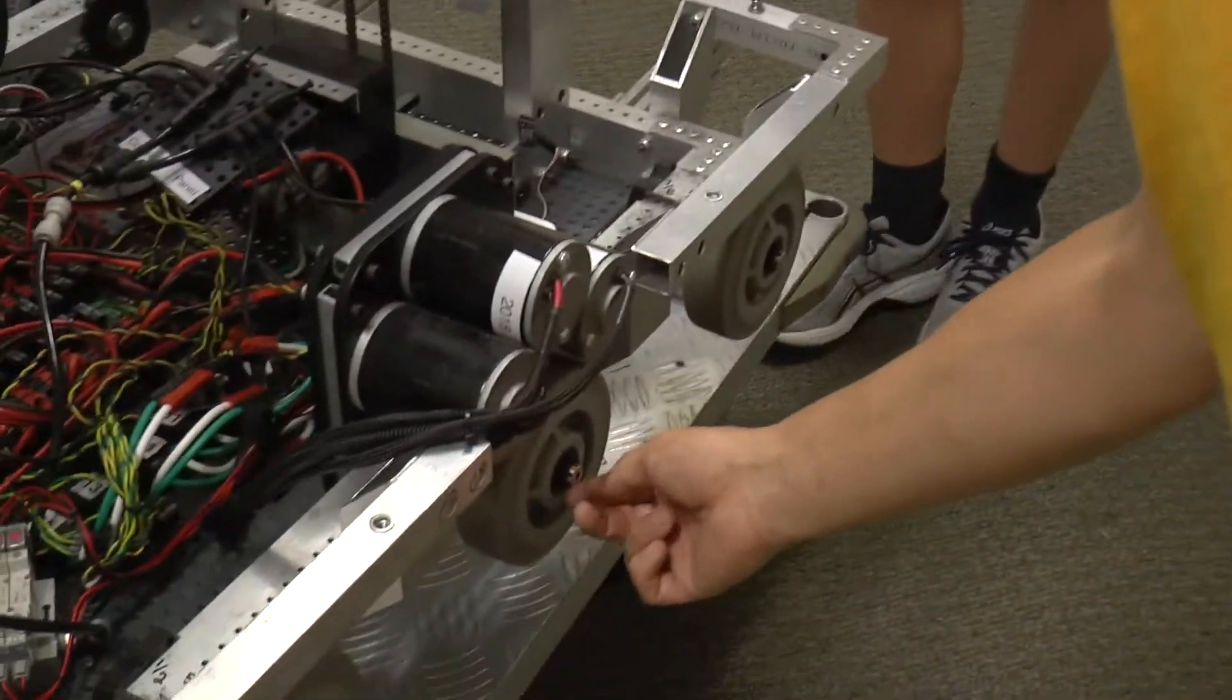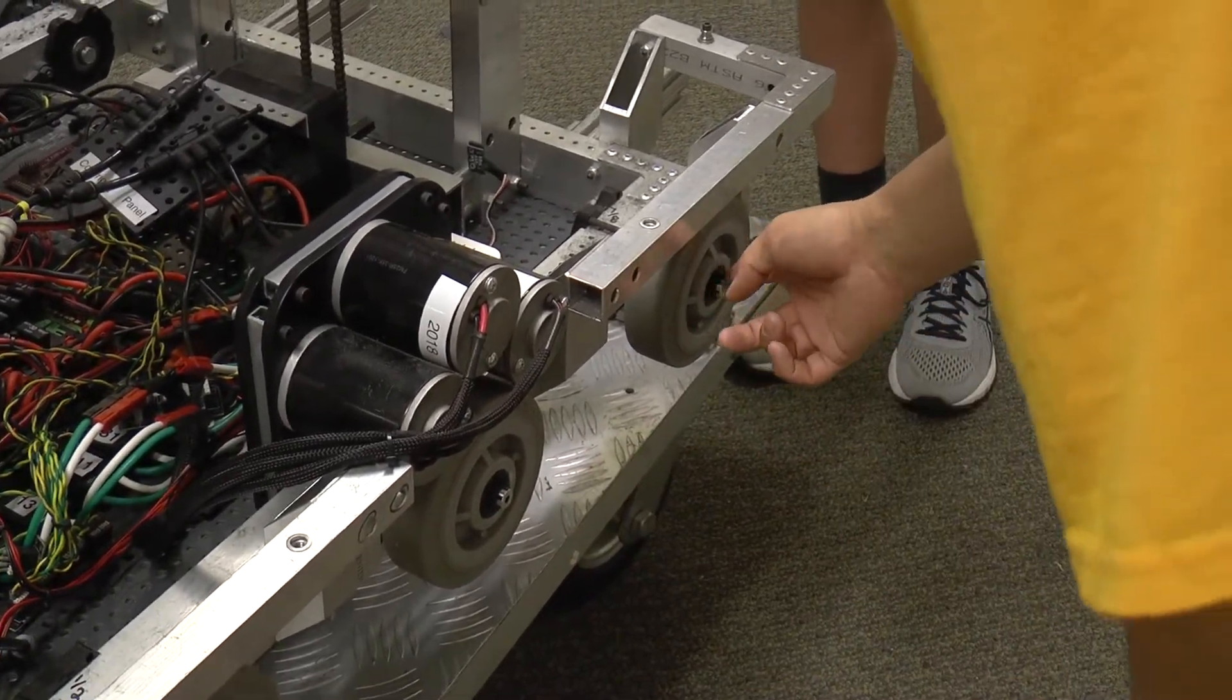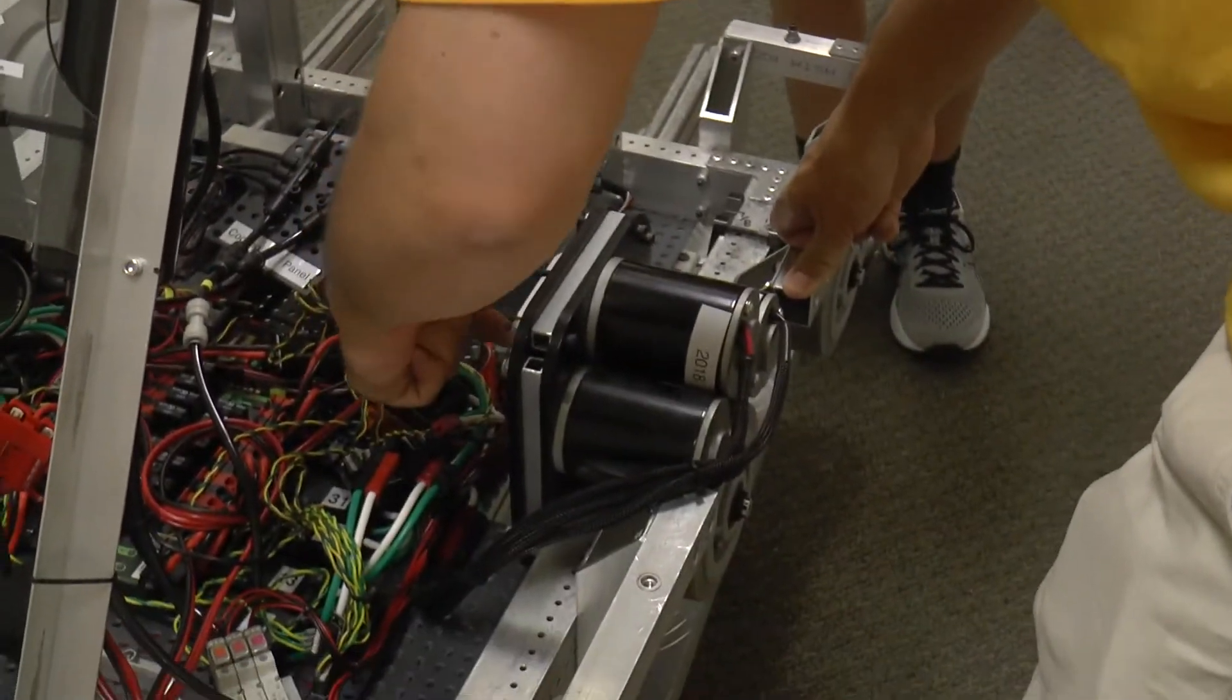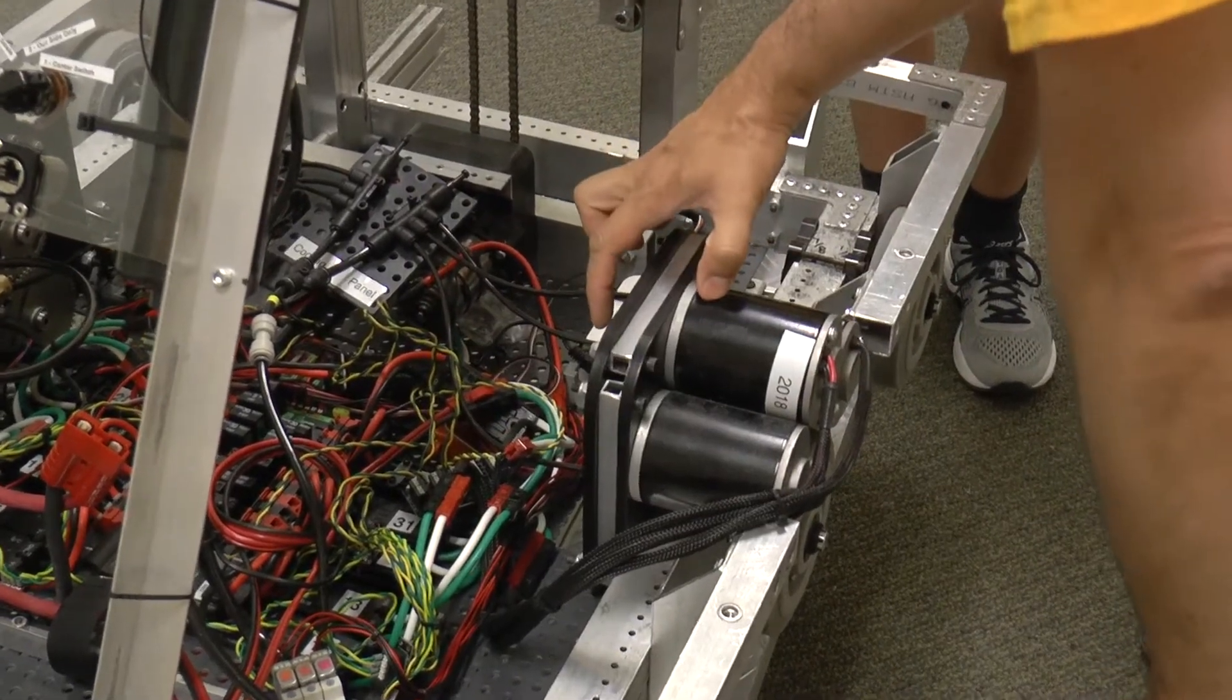That's going to be made out of thunder hex, which is a different kind of hex stock than this one. And then we're going to do a short little shaft that sticks through the center of the gearbox. It's only about this long. It sets right in here.